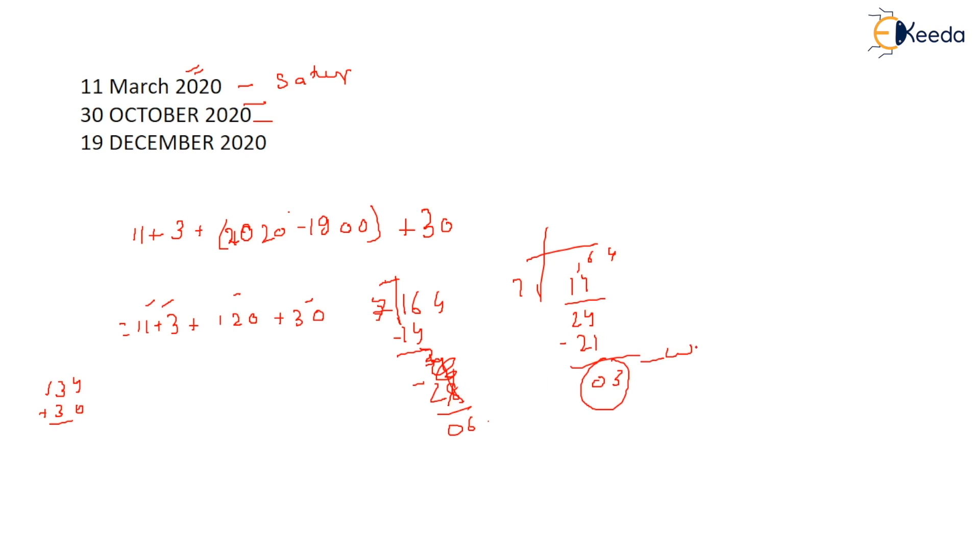15 August 2020. In August 2020 what will be the day? So 15 plus August, what code you write of August? August you have to write as 2.